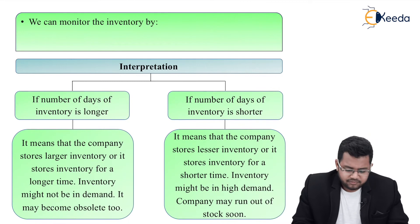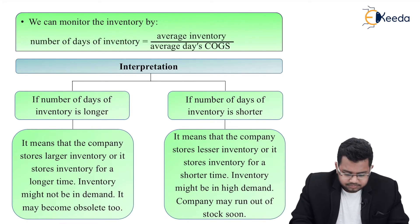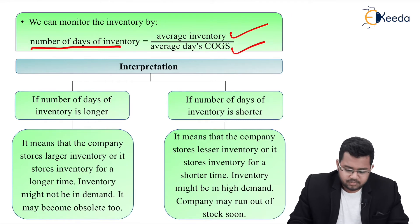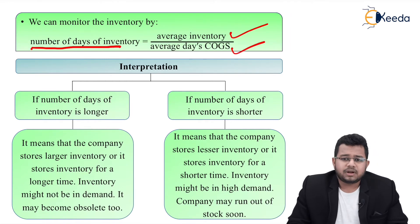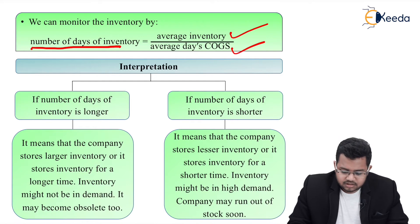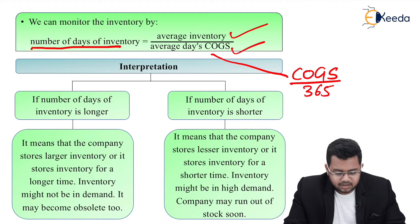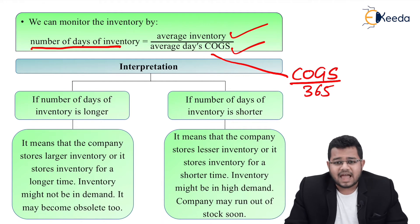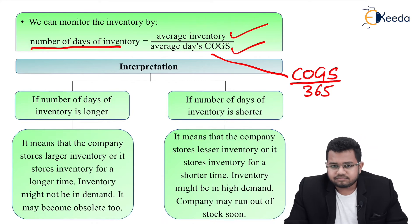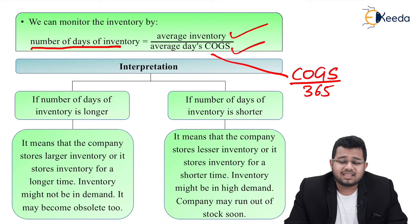We can monitor inventory using the formula: Number of Days of Inventory = Average Inventory divided by Average Day's Cost of Goods Sold. Average inventory is opening plus closing divided by 2. Average day's COGS is the cost of goods sold for the whole year divided by 365. For example, if the number of days of inventory is 30 days, it means the inventory will be in stock for 30 days before it is sold.